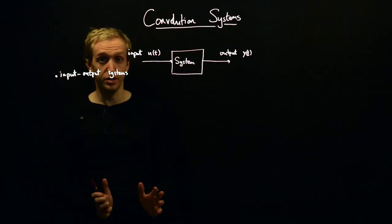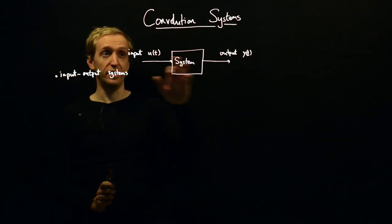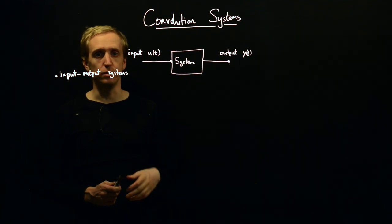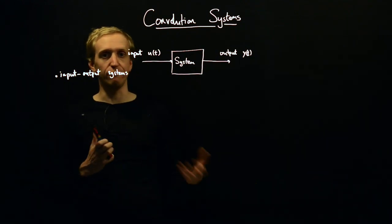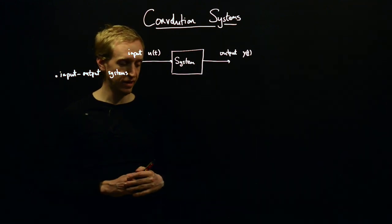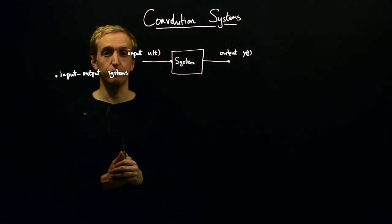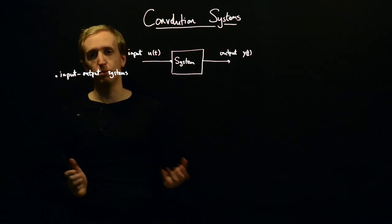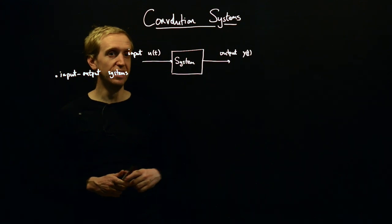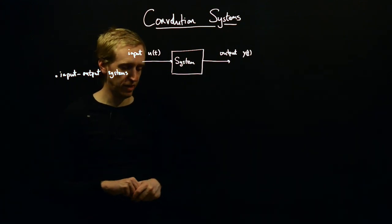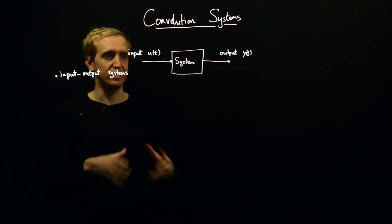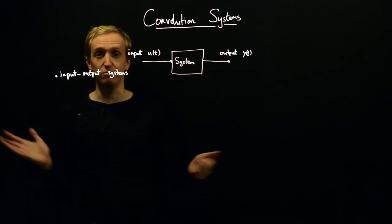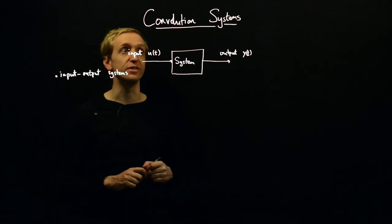Today we want to talk about a very important class of input-output system: convolution systems. These correspond to systems that have transfer functions, or linear systems. This is where a lot of control analysis tools are strongest, and it's a very good fit for typical control theoretic objectives. But today is really just about understanding this special class — what does it mean, and why a convolution system?